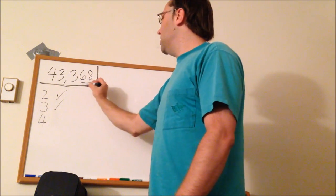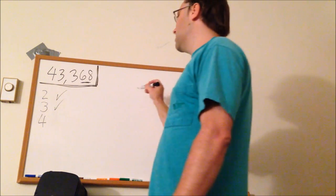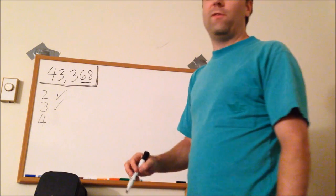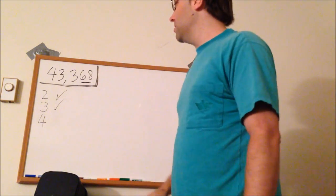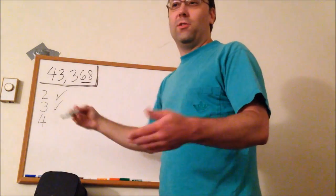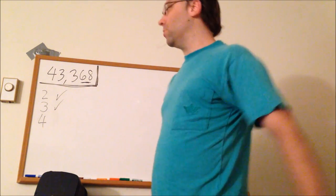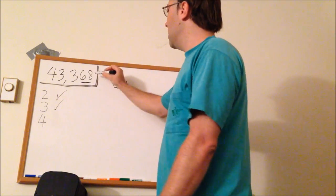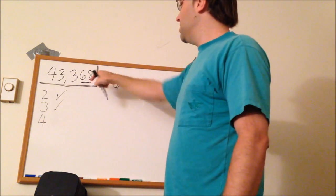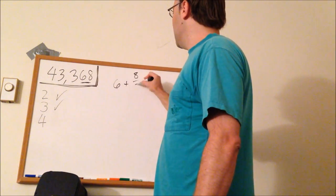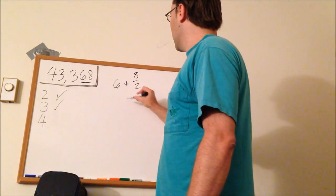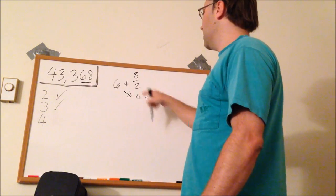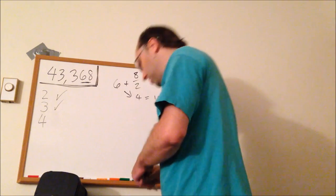Now 4. The last two digits are divisible by 4. 68, that's 17 times 4. This little shortcut is 6 plus whatever this 1's digit is divided by 2, which happens to be 4. And 6 plus 4 is 10, and if that's even, then the number is divisible by 4.